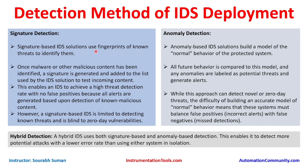Signature-based IDS solutions use fingerprints of known threats to identify them. If there is a known malware, a signature of that malware is kept, and once malicious content has been identified, a signature is generated and added to the list used by the IDS to test incoming content. This enables an IDS to achieve a high threat detection rate with no false positives because it is a direct comparison — similar to how antivirus works — since all alerts are generated based on detection of known malicious content.